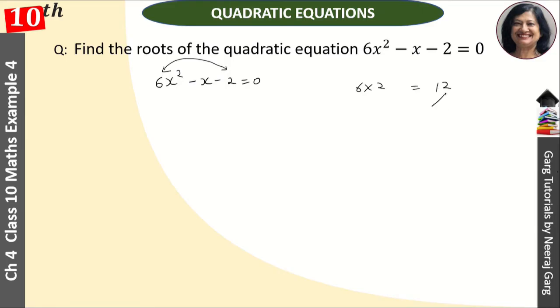The x² coefficient and constant multiply: 6 × 2 = 12. We need to factor 12, and because here is a minus sign, this is the difference of the x coefficient. The x coefficient is 1 actually.